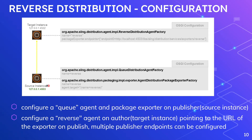These are all the configurations we should be enabling for reverse distribution. First, configure a queue agent and package exporter on publishers — that is the source instance. However many publishers you have, you should configure a queue agent and package exporter on those publishers. Then you need to configure a reverse agent on author, the target instance, pointing to the URL of the exporters on publish. There are two sets of configuration: queue distribution agent factory named 'reverse', and agent distribution package exporter factory named 'reverse', and we link them with agent.target name equal to reverse.